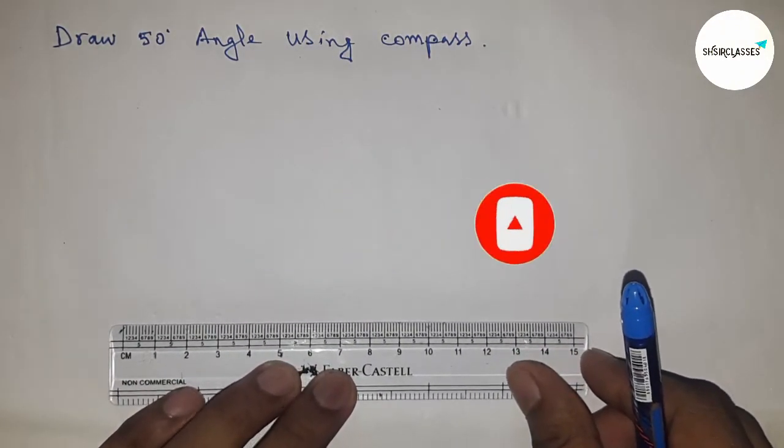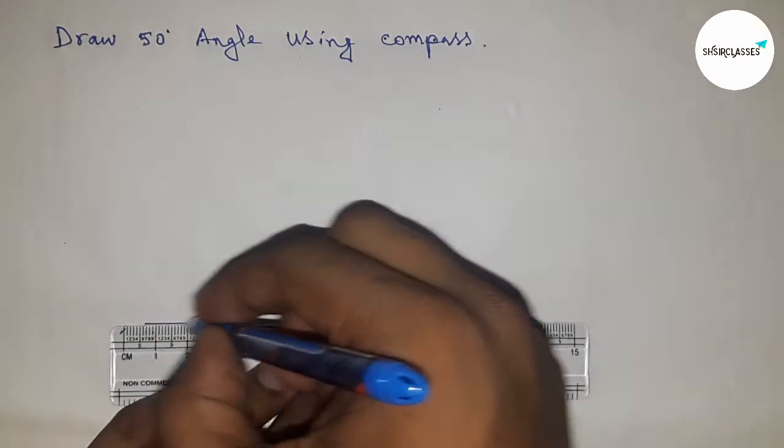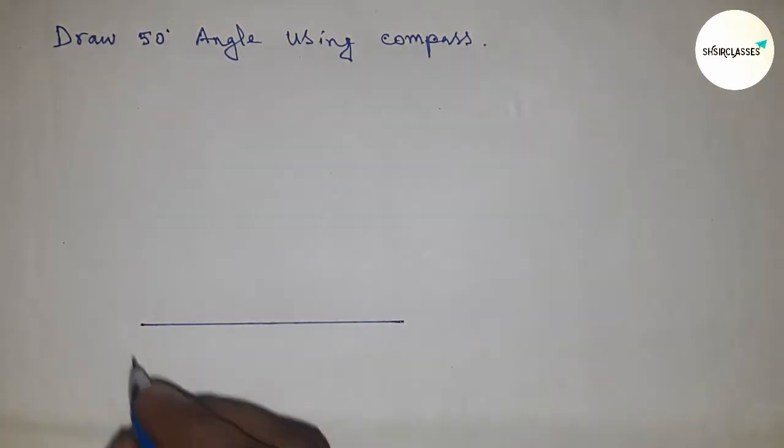First of all, draw a line here. This is line AB.